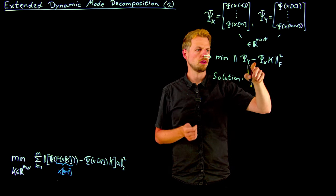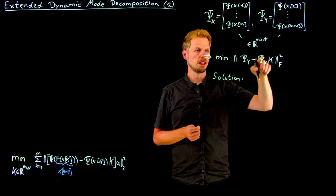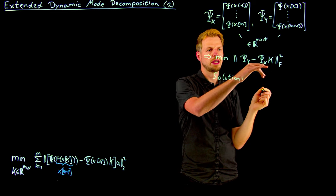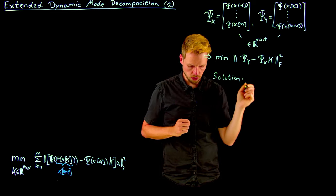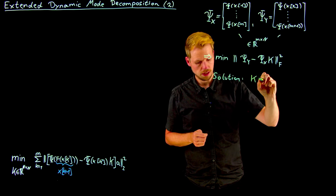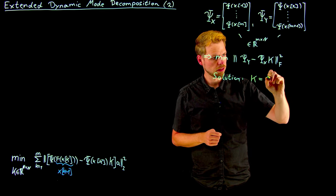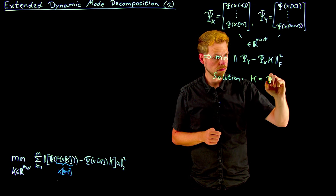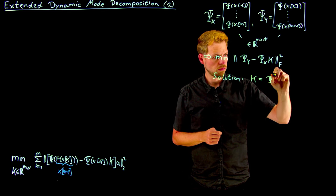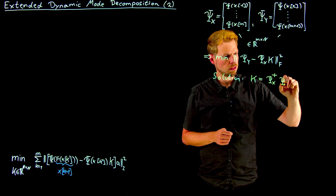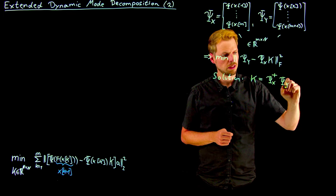And so if you see, this is sort of psi x k is equal to psi y would be the optimum. And so we can take the pseudo-inverse to get as close to this as possible. So k, the matrix, is simply psi x pseudo-inverse times psi y.